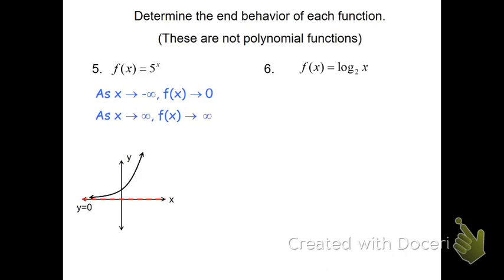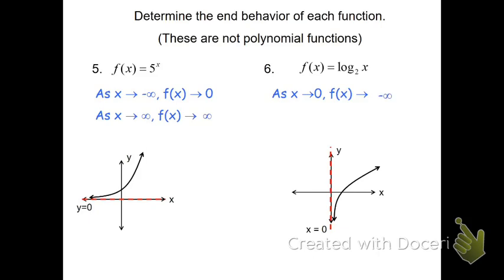The log function is the inverse of the exponential, and its graph has a vertical asymptote. When we talk about end behavior moving to the left, x will not approach negative infinity — instead we have the asymptote limiting us. So as x approaches 0, f is going down, meaning f is approaching negative infinity. Notice that the 0 and the negative infinity from the exponential have switched places in the log — that's because these are inverse functions, and the inputs and outputs switch. As x approaches positive infinity, moving to the right, the graph continues to rise, so f approaches positive infinity as well.